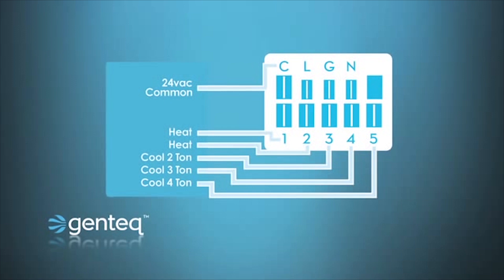And finally we see an example of a furnace application. We see that there are two heat taps and three cool taps. The three cool taps being for whatever tonnage of air conditioner you're going to connect to this furnace. In this case two, three, or four ton. And we also notice that all five taps are programmed.